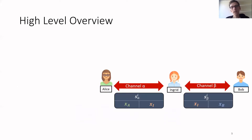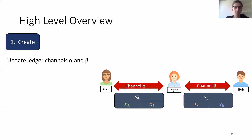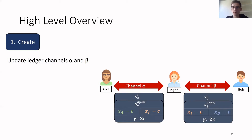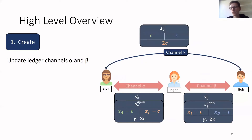On a high level, how can we build a virtual channel based on channels alpha and beta? We have parties Alice, Ingrid, and Bob, and channels alpha and beta with states S_alpha_i and S_beta_i. In order to create a virtual channel, the parties update the ledger payment channels alpha and beta to a new state called S_open, where the balances of the parties get reduced by C coins, and instead these coins get assigned to a new channel gamma. Once done, channel gamma is considered open with an initial state S_gamma_0, where Alice owns C coins, Bob owns C coins, and Ingrid owns no coins but has a collateral of 2C coins.